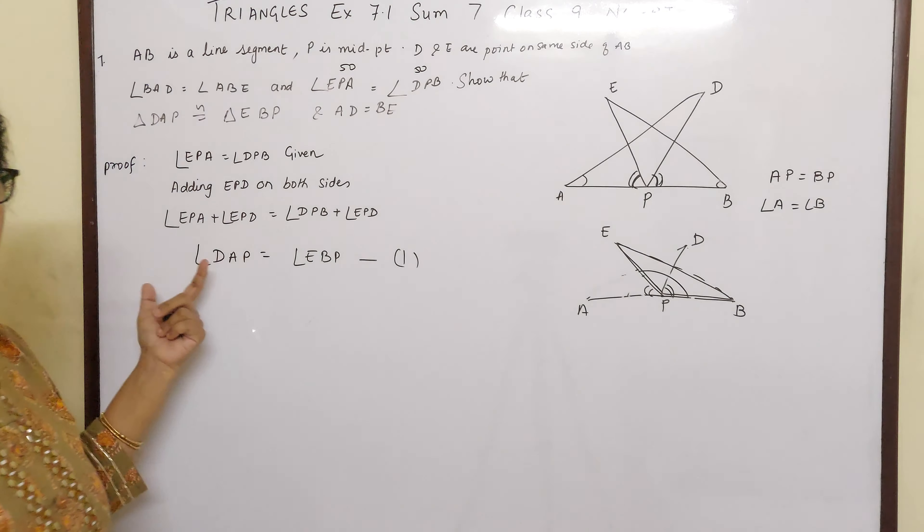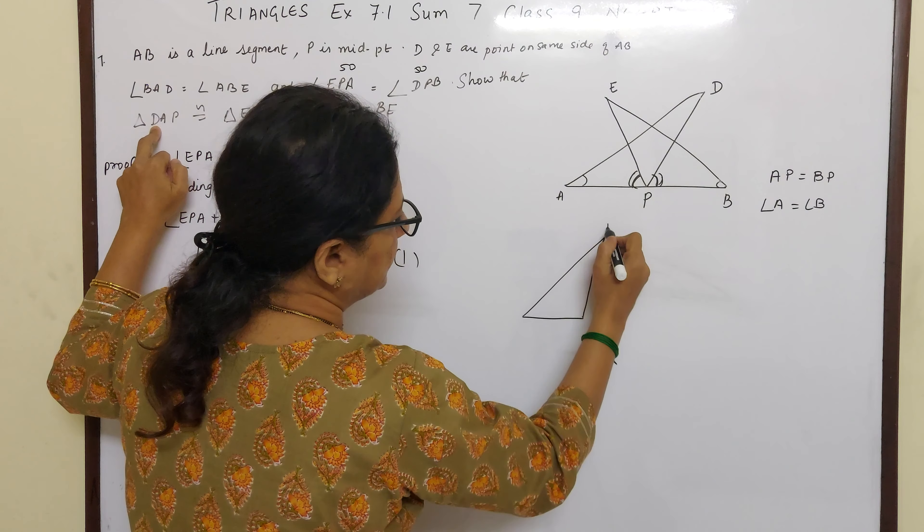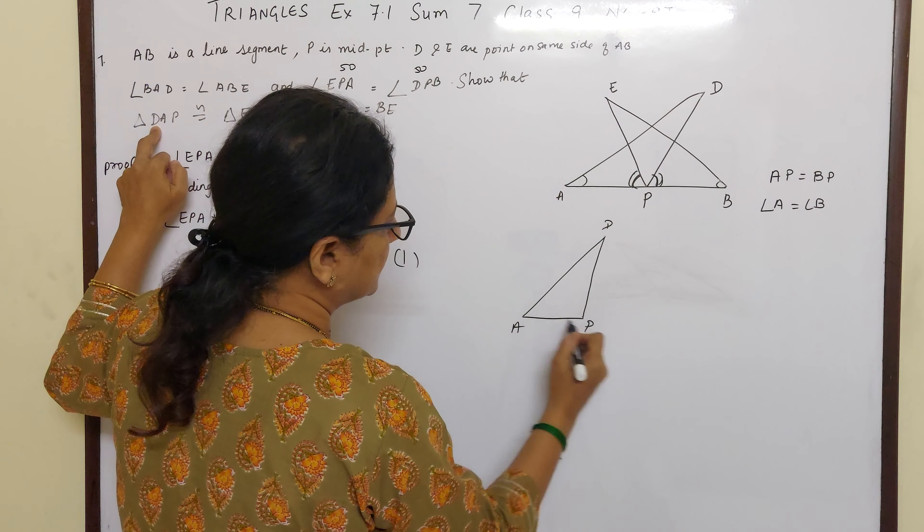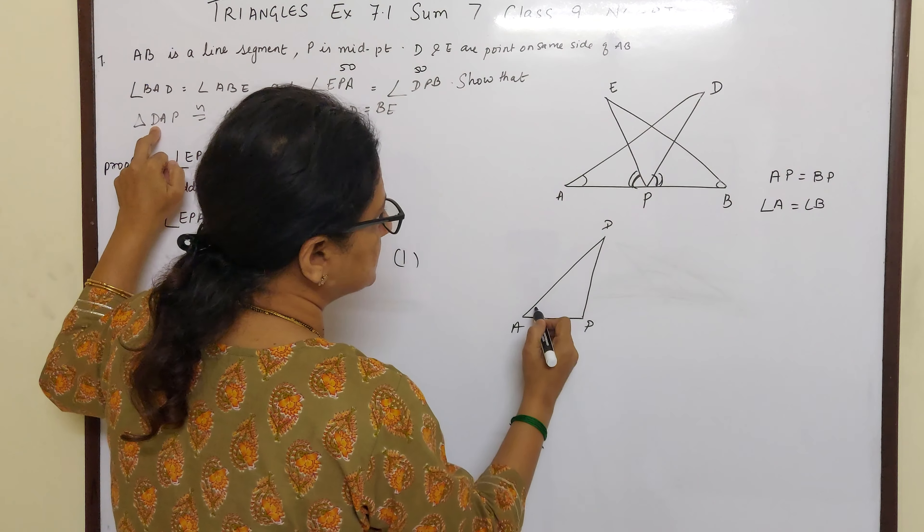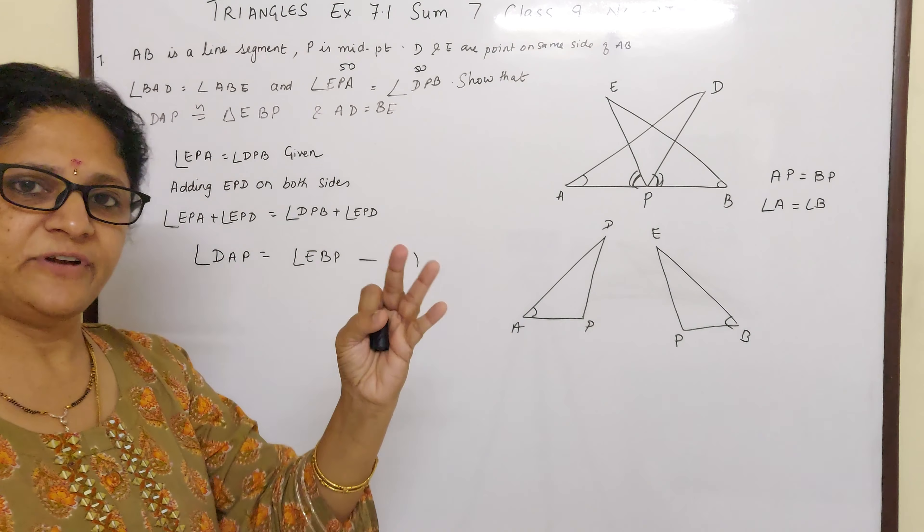Now here if you see, let me draw this DAP. DAP, it looks like this. DAP looks like this, right? And EBP, EB is slanting and P is like this. So this is what, and B is marked like this. So in this we have to prove these two triangles are congruent, and we need three points.